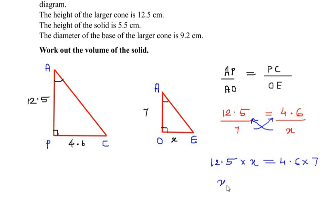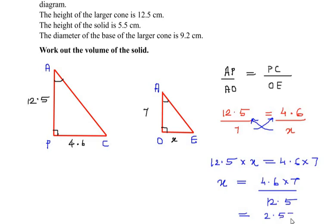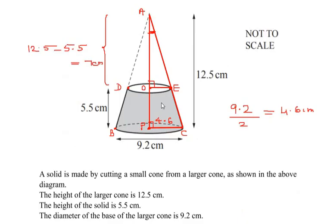Taking x as the subject: x = (4.6 × 7) / 12.5, which gives us x = 2.576 centimeters. This is the radius OE of the smaller cone. Since this is an intermediate step, we take a minimum of three decimal places for maximum accuracy.